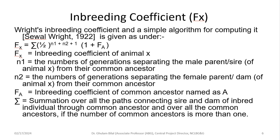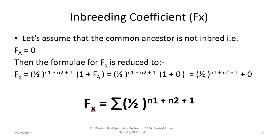We will develop paths through the common ancestor, as shown in the examples, and it also sums over all common ancestors if more than one exists. We can simplify this formula: if Fa is zero — meaning the common ancestor is not inbred — then the formula becomes Fx = summation over (1/2)^(n1 + n2 + 1).